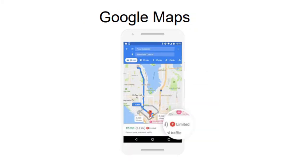Google Maps analyzes historical traffic patterns for roads over time and uses certain predictive algorithms present in machine learning. It has been one of the amazing applications that almost all of us have been using while traveling.